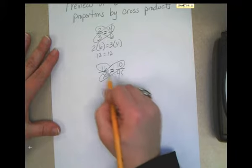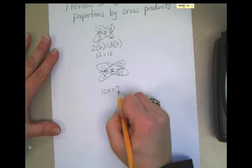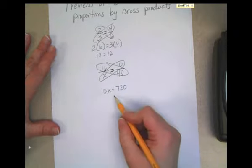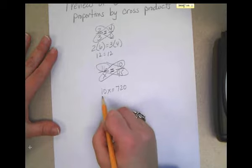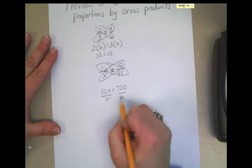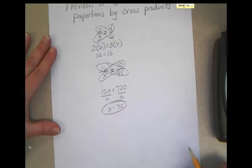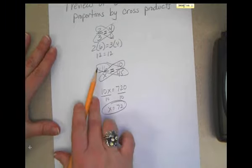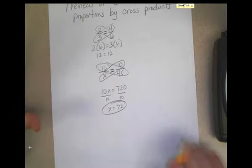And 16 times 45 is 720. And now, of course, we know how to solve this. This is a one-step equation. The variable x is multiplying by 10, so you need to divide by 10. And you end up with 72. You can plug it back in to make sure it makes sense. 16 is to 72 as 10 is to 45. That sounds about right.